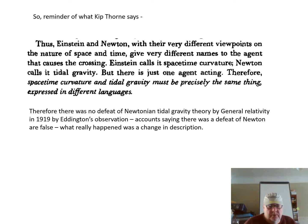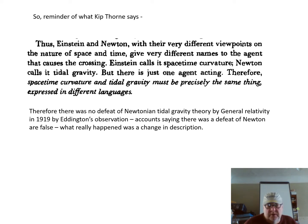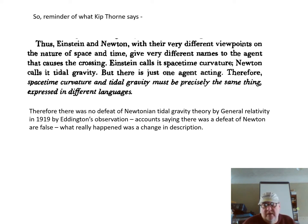As a reminder of what Kip Thorne said: space-time curvature and tidal gravity must be precisely the same thing expressed in different languages. What we can conclude is that there was no defeat of Newtonian tidal gravity theory by general relativity in 1919 through Eddington's observation. Accounts that say there was a defeat of Newton are false. What really happened was a change in description — Newton dealt with forces, and general relativity gets interpreted as dealing with space-time curvature. That's all that changed.